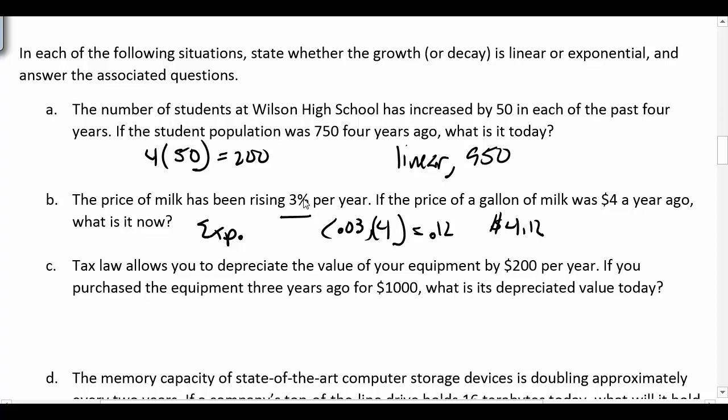C: Tax law allows you to depreciate the value of equipment by $200 per year. If you purchased the equipment three years ago for $1,000, what is its depreciated value today? Okay, so we're going to depreciate a constant amount, so that puts it at a linear decay. And if it's $200 per year, then three times 200, so it's going to decrease by $200 every year, puts that at $600. So then $1,000 minus the $600 would be $400.